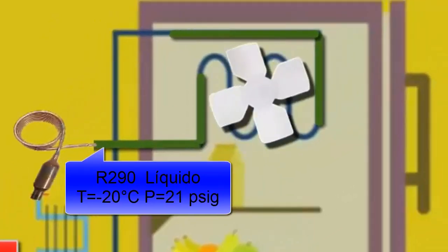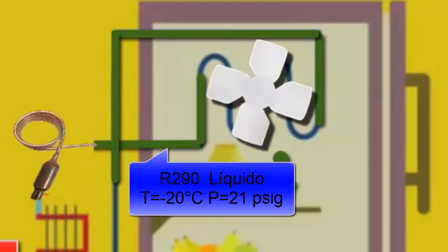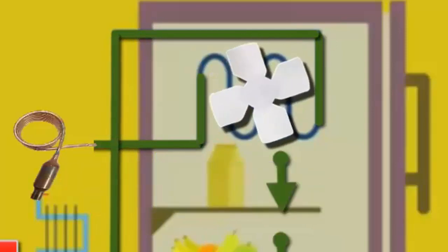The R290, now in a liquid state with low pressure and temperature, returns to the evaporator to start the refrigeration cycle again.